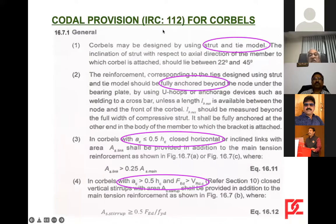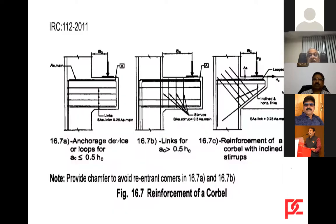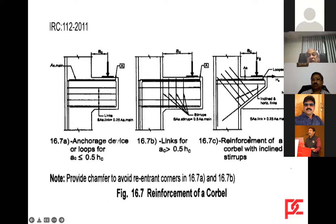The code provisions for design of corbels are given in IRC SP 1.1.2. In a typical corbel, the main reinforcement is horizontal ties, and shear reinforcement can be provided as horizontal links or, if the overhang is slightly larger, as both horizontal and vertical stirrups, or even inclined stirrups. These are the types of reinforcement arrangements in corbels.